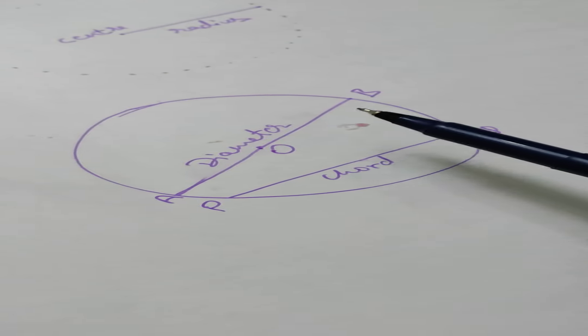So this is the diameter of the circle and in fact it is the greatest chord of the circle. Joh sabseh badi chord hai woh diameter hooti hai. Aur iske baad dekhte hain ki arc kya chiz hai. Abh arc kya hai?